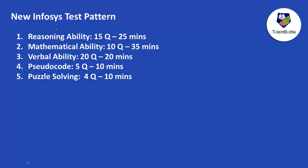This year they have added two more sections. The first section is reasoning ability with 15 questions and 25 minutes. Then there is mathematical ability with 10 questions and 35 minutes. There will be a verbal ability section with 20 questions and 20 minutes. They have introduced a new pseudo code section with 5 questions in 10 minutes, and a new puzzle solving section with 4 questions in 10 minutes.